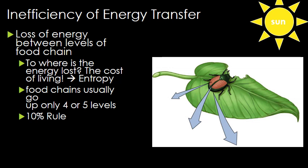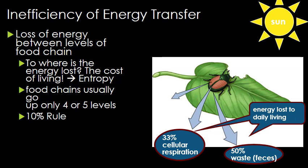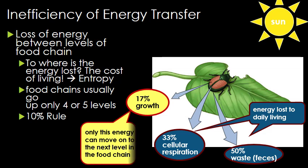Looking at that inefficiency — how much energy is lost and where? About half of the energy that goes into an organism is released as waste or feces. Another roughly 33% is lost to cellular respiration to keep the organism running. That leaves about 17% for growth, and that growth is the only energy that can be moved on to the next level in the food chain. All organisms have a different percentage based on efficiency, but we summarize this down to what's called the 10% rule: 10% of the energy will transfer on to the next trophic level. So if you have 100 joules of energy in a plant, the herbivore gets 10%, and the carnivore that eats the herbivore gets just 1% of that original energy.